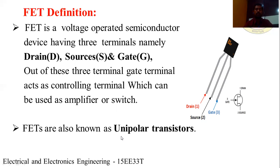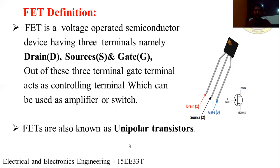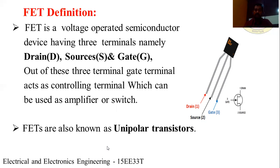FETs are also known as unipolar transistors. Unipolar transistor means the current conduction takes place only by majority charge carriers — either holes or electrons. Like BJT, here also we have three terminals. BJT stands for bipolar junction transistor.